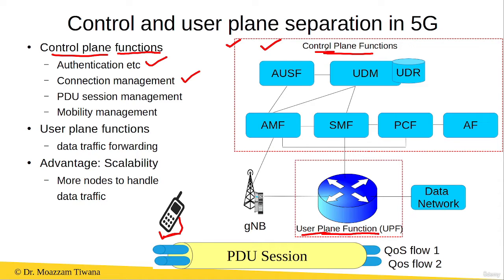Connection management between the user equipment and the 5G network is also handled by the control plane functions. Similarly, PDU session management is handled by the control plane functions. For example, if we have a PDU session between the user equipment and the user plane function through the gNB, then the setup, maintenance, and teardown of this PDU session is the responsibility of the control plane functions.